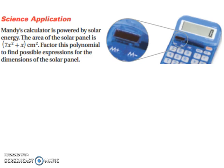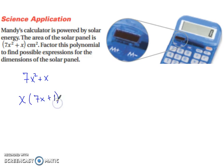Let's try a science application. Mandy's calculator is powered by solar energy. The area of the solar panel is 7x squared plus x centimeters squared. Factor this polynomial to find possible expressions for the dimensions of the solar panel. We can factor out an x from 7x squared plus x, which leaves us with 7x plus 1. So possible expressions for the dimensions of the solar panel are x centimeters and 7x plus 1 centimeters.